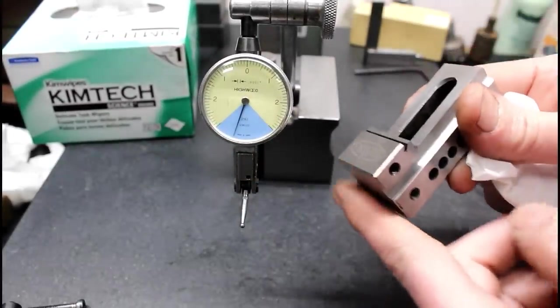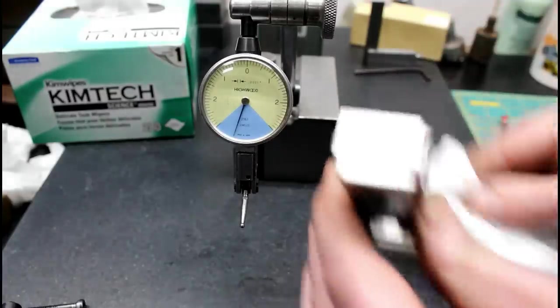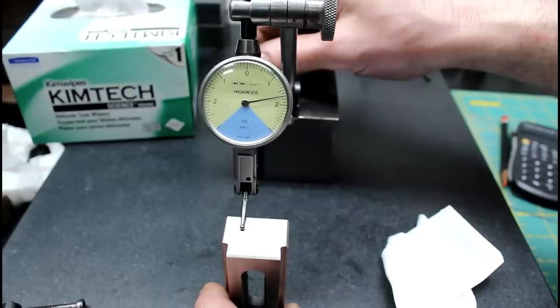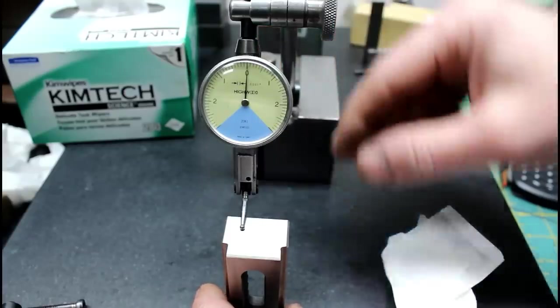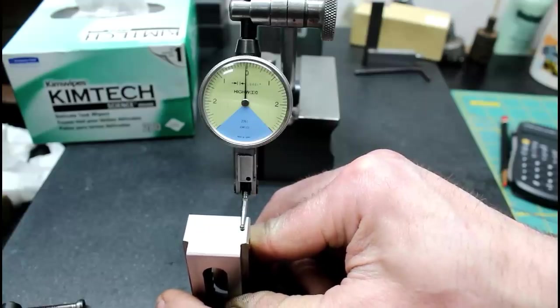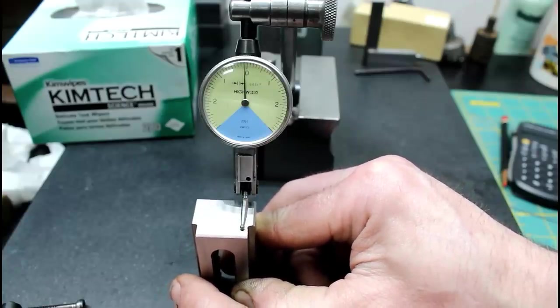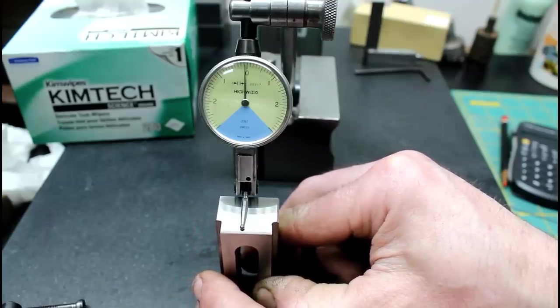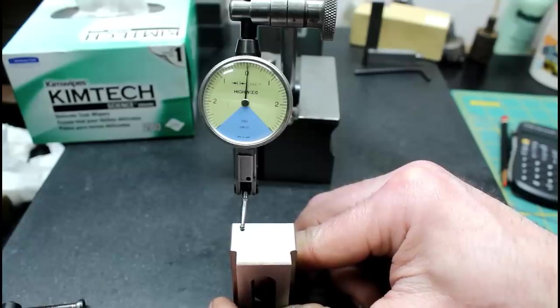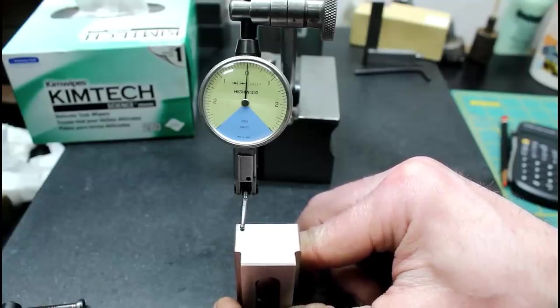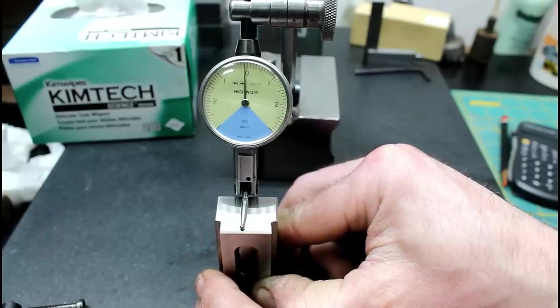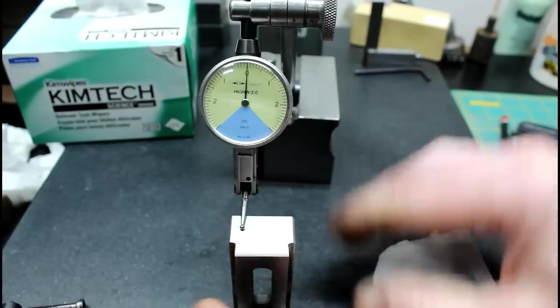Now we're going to check if the front here is parallel with the top. Clean it off. Come in and zero. That's close enough for me. Now this is a tenth indicator so it's going to pick up basically anything that's off. There's a tenth low, a tenth, and a little above zero. So yeah, basically within a tenth. That's actually decent.